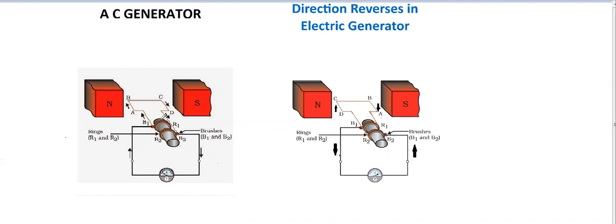To slip rings R1 and R2, an axle can be attached so that the coil can be rotated in the magnetic field. As the coil is rotated in the magnetic field, suppose the coil is rotated in the clockwise direction.